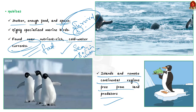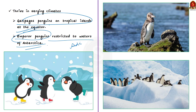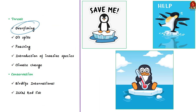Different penguin species thrive in varying climates, ranging from Galapagos penguins on tropical islands at the equator to Emperor penguins restricted to the pack ice and waters of Antarctica. The seasons of the Southern Hemisphere are opposite to those of the Northern Hemisphere. The most southerly penguin colony in the world is a group of Adélies that regularly nest near Cape Royds in Antarctica.